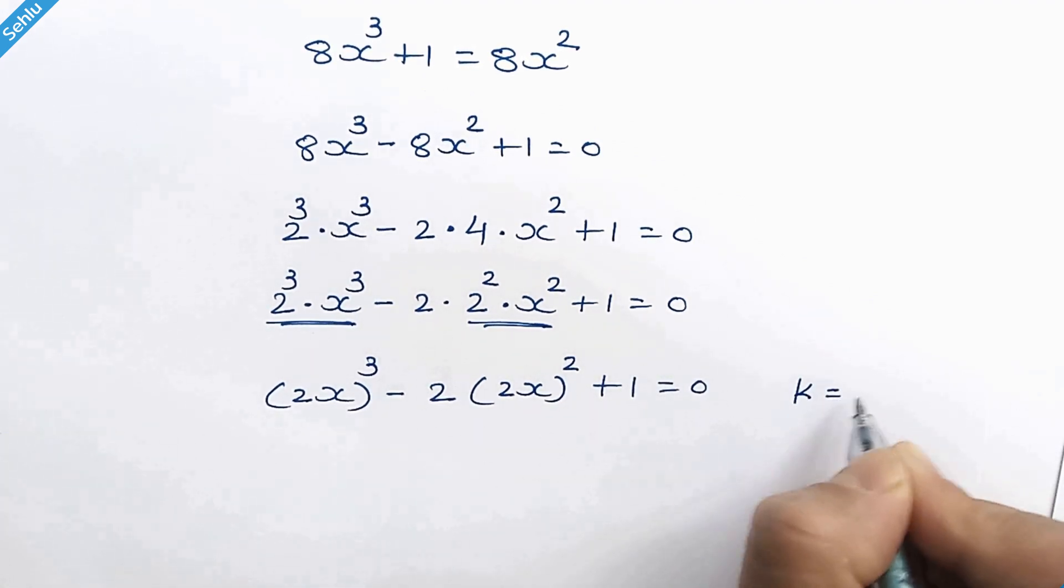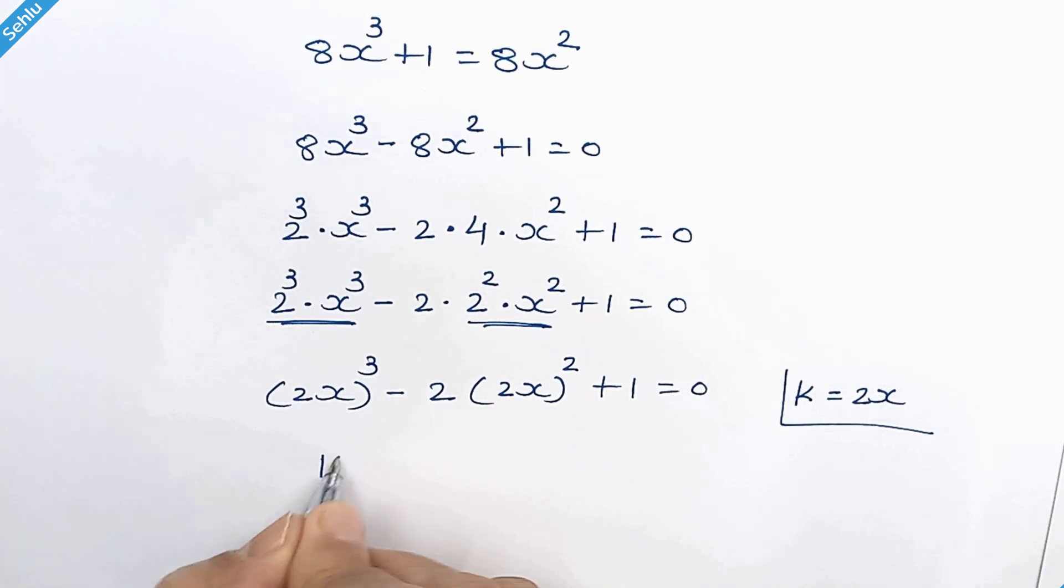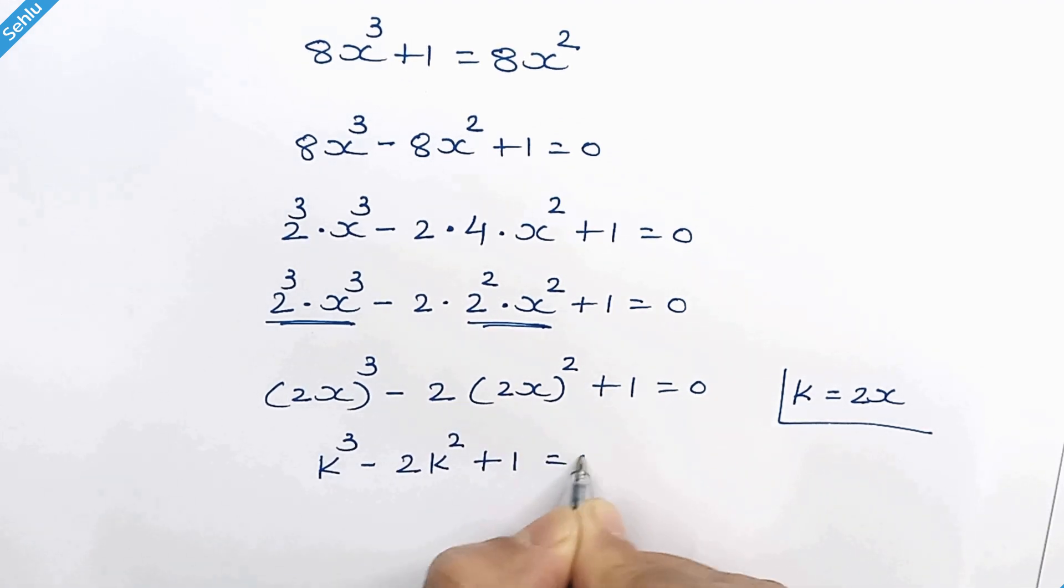Let's take k in place of 2x, so here we have k cube minus 2k square plus 1 is equal to 0.